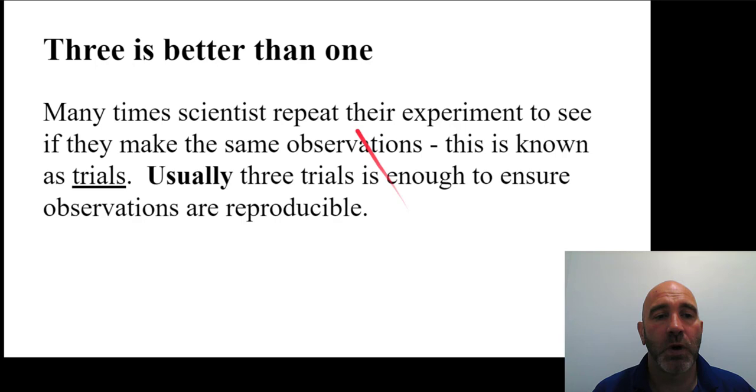Three is better than one. Many times, scientists repeat their experiments to see if they make the same observations over and over again. This is known as a trial. Usually, three trials is enough to ensure that an observation is what's called reproducible, or I can get it again.